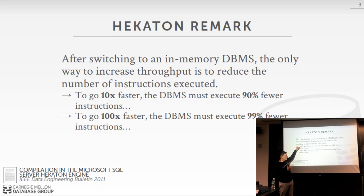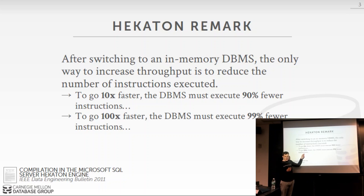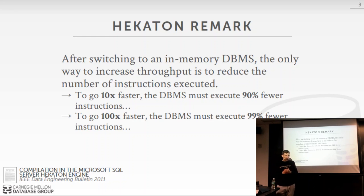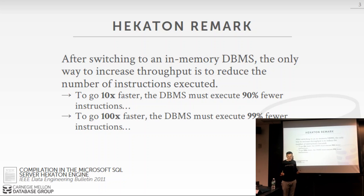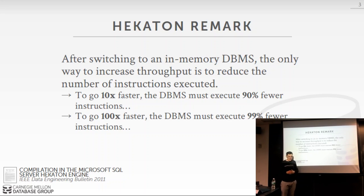They came up with this back-of-the-envelope calculation: if you want your database system to go 10x faster, you need to execute 90% fewer instructions. But if you want 100x faster, you've got to cut out 99% of the instructions. The first one is doable — not easy, but possible. Slicing out 99% of instructions is pretty challenging. There's no magic flag in GCC — we can't set O100 — to make all these instructions go away. We're going to have to do careful engineering and reevaluate how we design our database system.